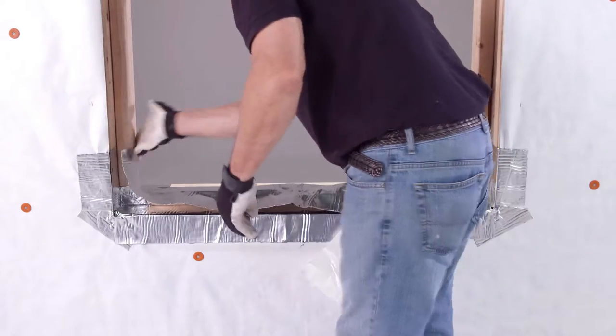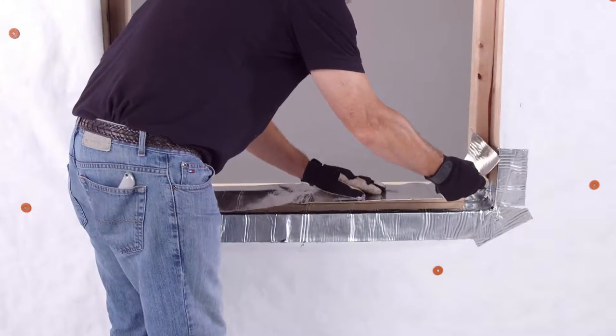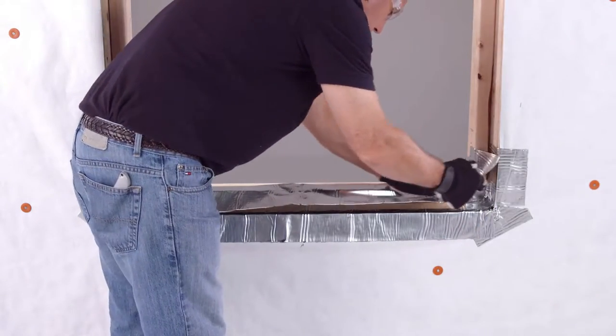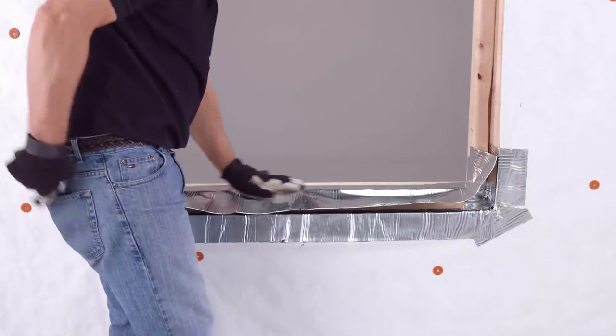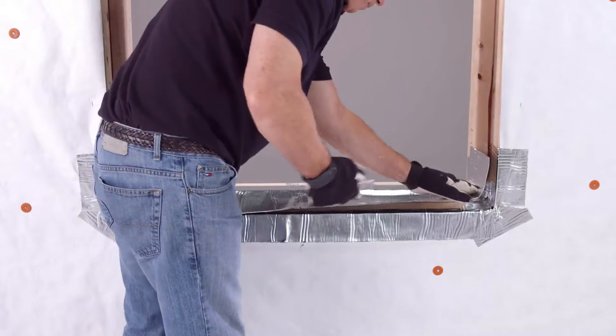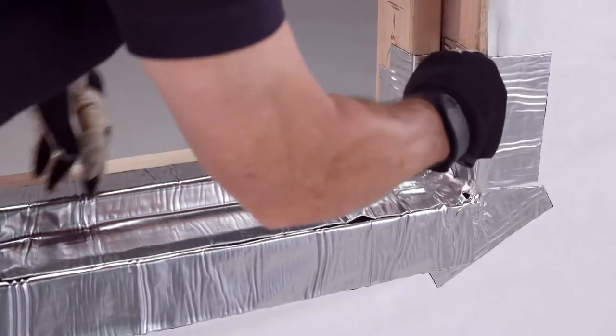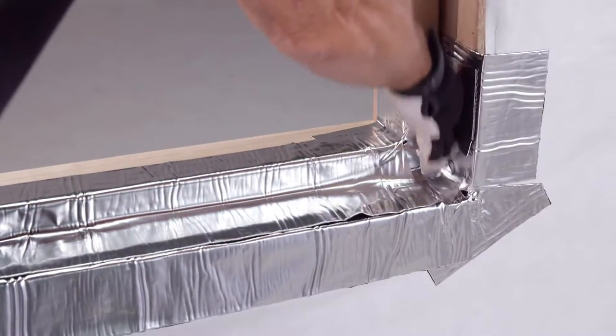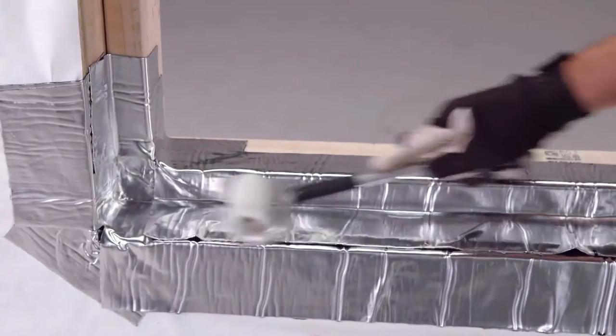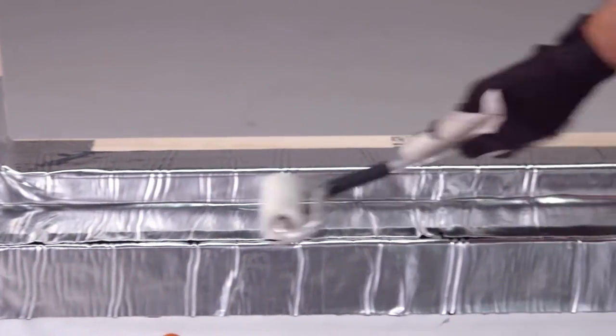Now center the flashing tape onto the buck sill and extend it up each side jam a minimum of six inches. Then make relief cuts in the corners and fold the buck flashing over the primary sill flashing with a minimum two inch overlap. Use the J-roller to remove any air pockets.